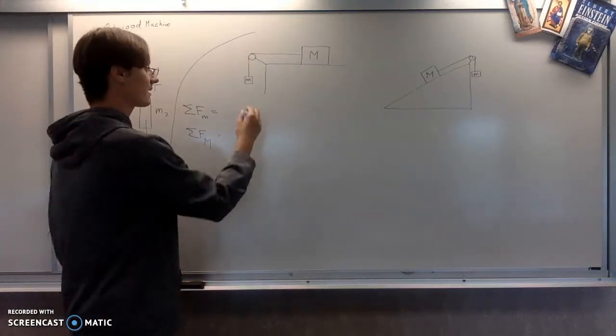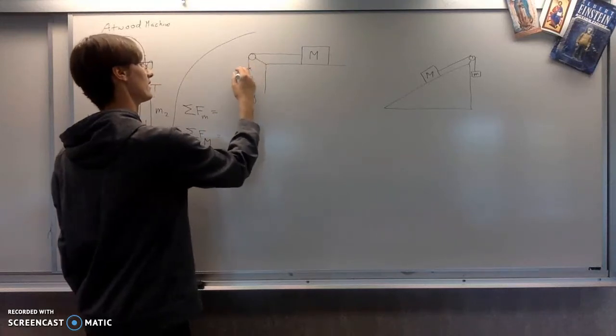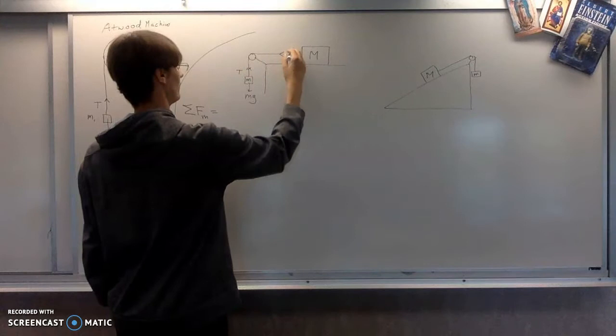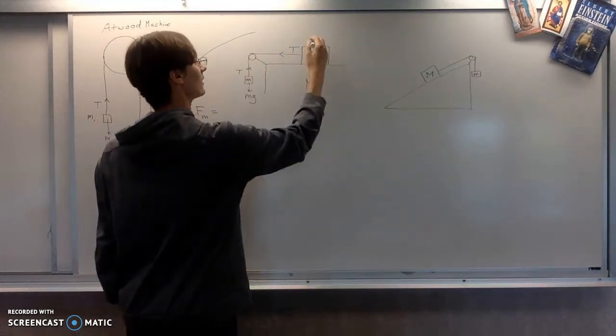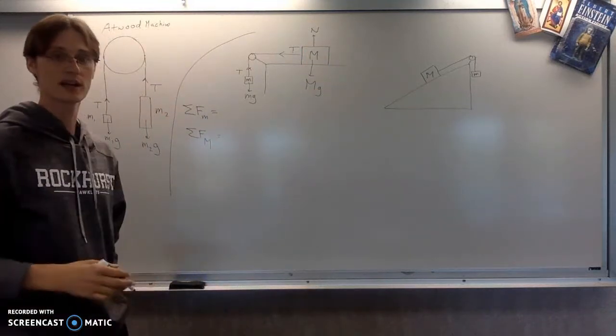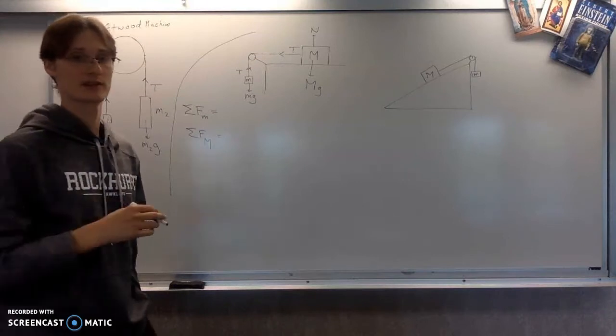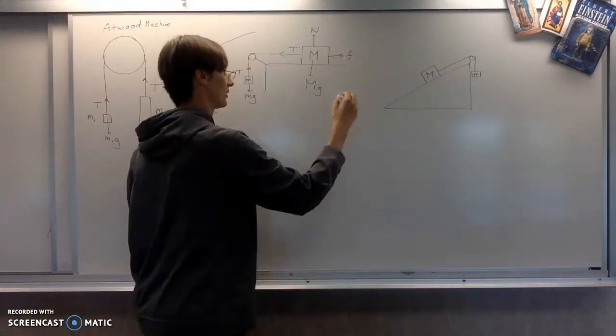We've got the same assortment of forces more or less. We've got Mg, tension, tension. This one has big Mg. That's got normal force acting upwards on it. And it might even have friction. In some questions, there will be friction. So I'll go ahead and put it in there.